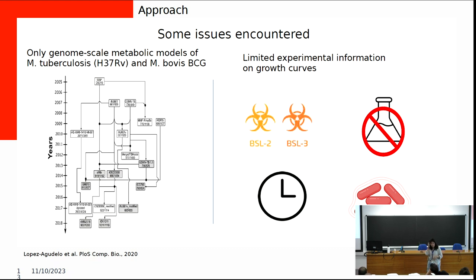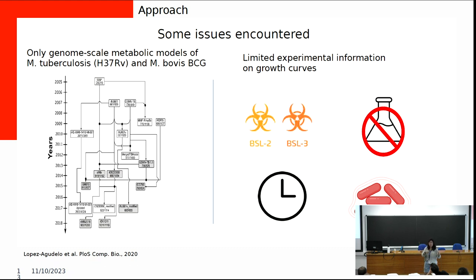Some mycobacteria don't grow in liquid media — for example, Mycobacterium ulcerans. Many take a very long time to grow, and adapting from solid plates to liquid flasks can take about a month. They also tend to clump a lot, which makes growth curves in liquid media difficult.